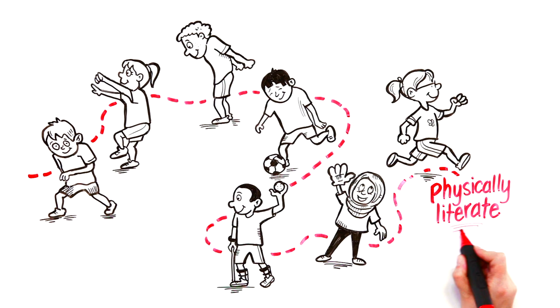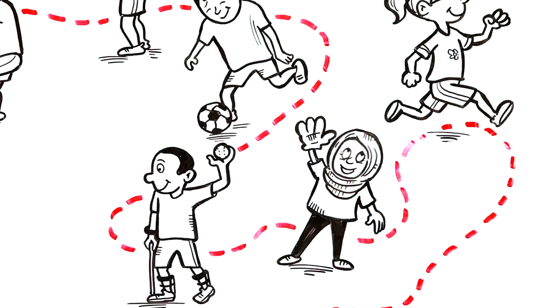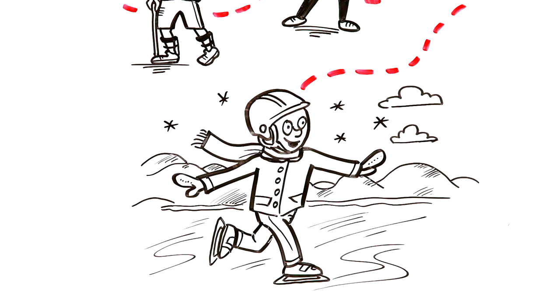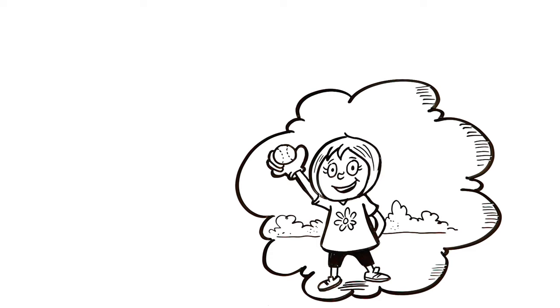If you become physically literate and learn these basic skills, then you'll be able to try more activities. And activities are fun. If you can run, you can take part in soccer, basketball, or hiking. If you can throw, you can play baseball, cricket, or wheelchair bocce.